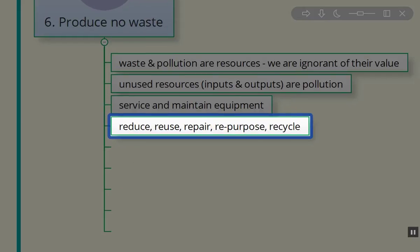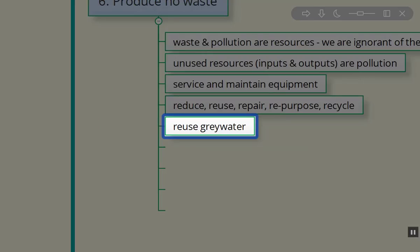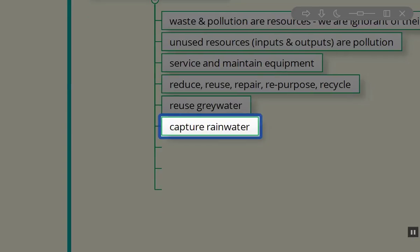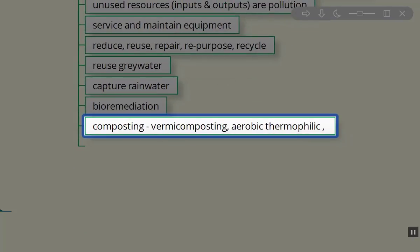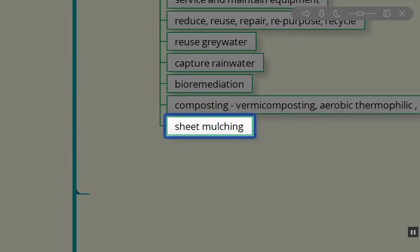So we want to reduce, reuse, repair, repurpose, recycle in order to produce less waste. We want to reuse gray water whenever possible. We want to capture our rainwater. We want to use bioremediation as we can. We want to compost as many different ways as possible from our little worm beds, to our composting piles, to our heat generating thermophilic composting. Sheet mulching, not producing waste, not letting the paper products and cardboard go out in the world. We can use the cardboards as well for our mushroom inoculation.